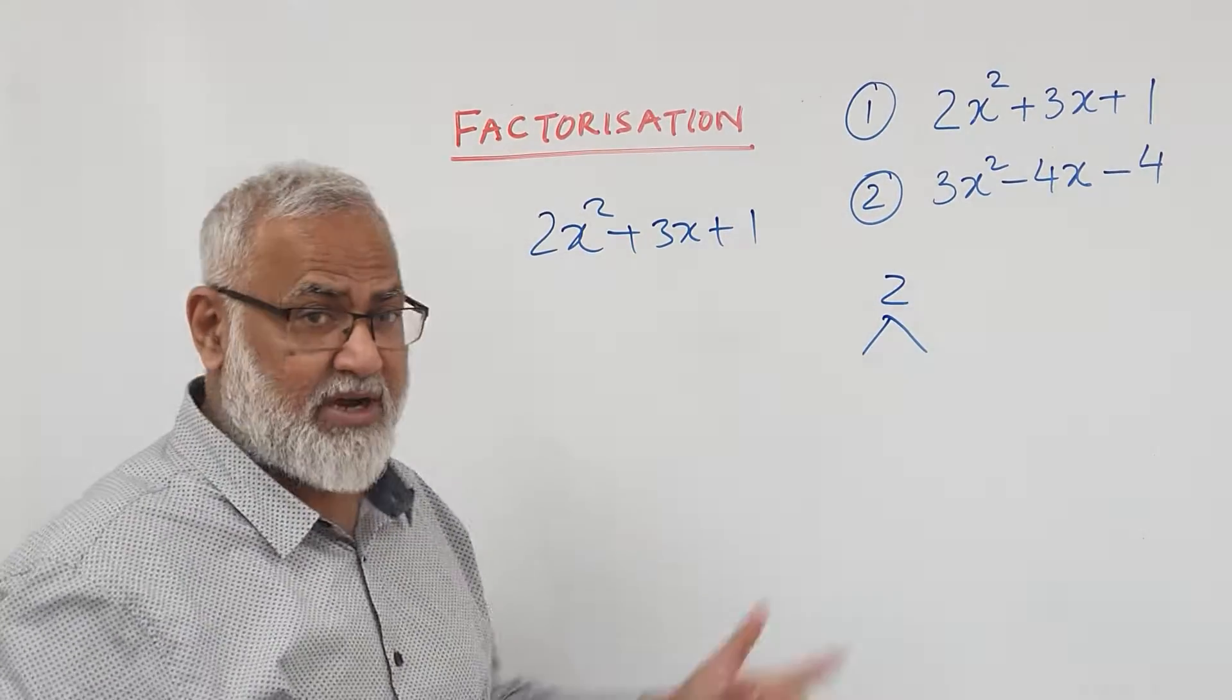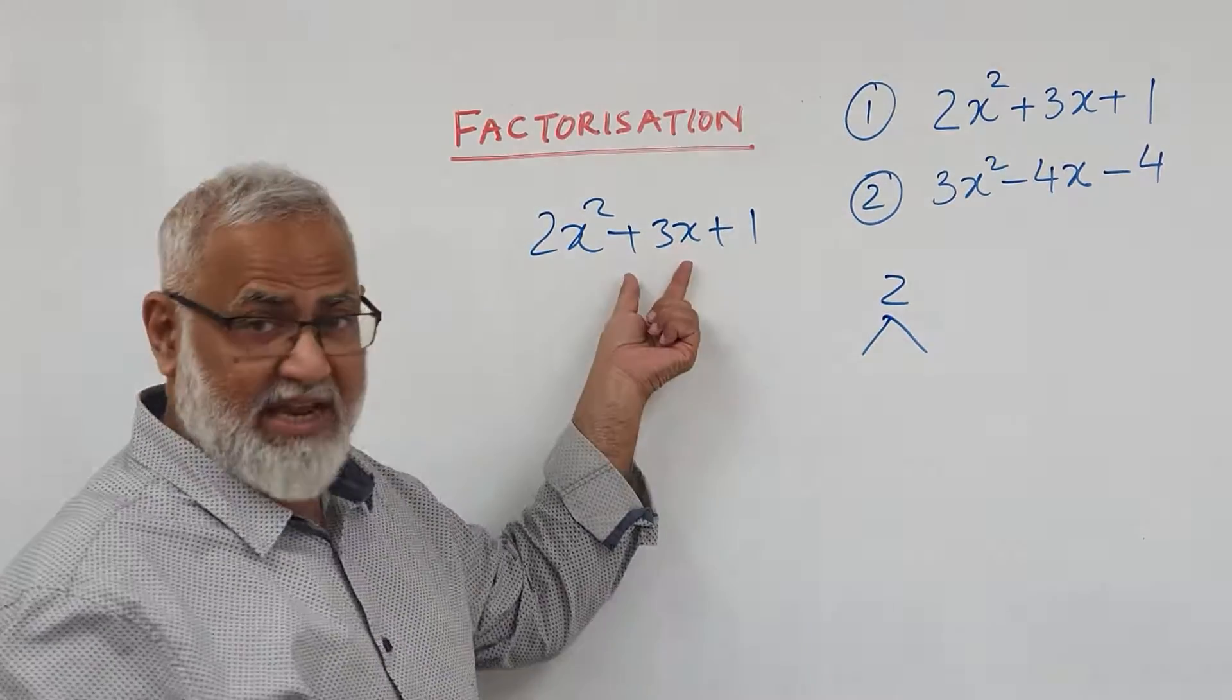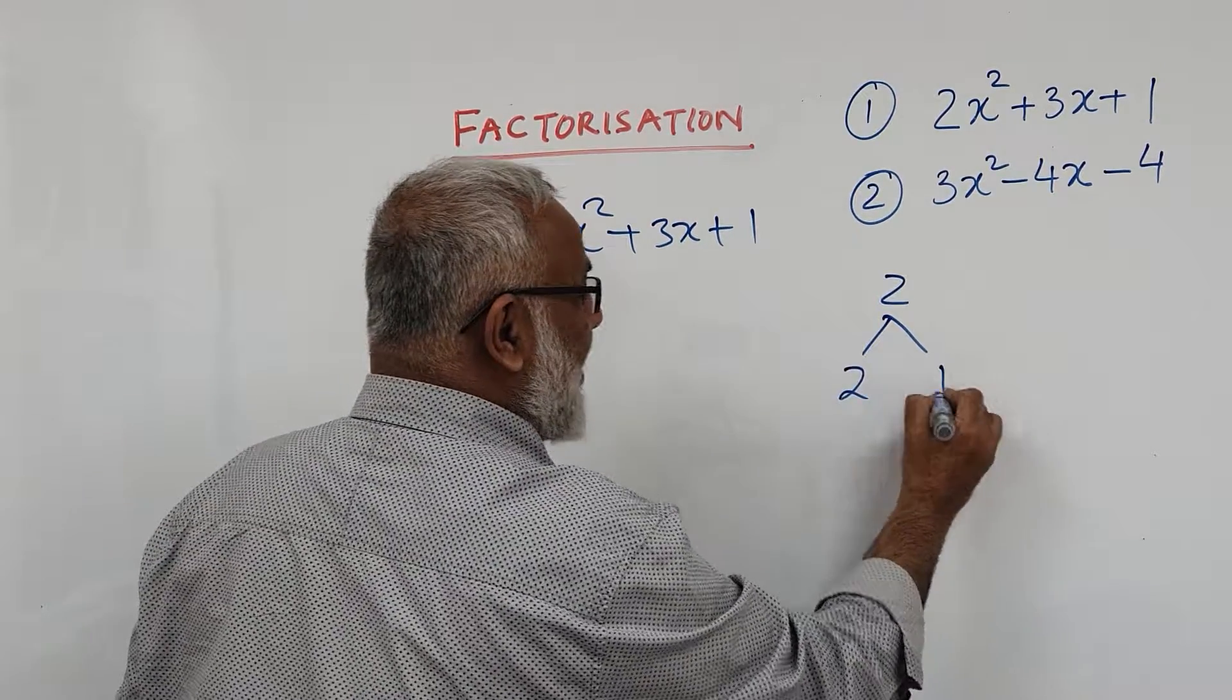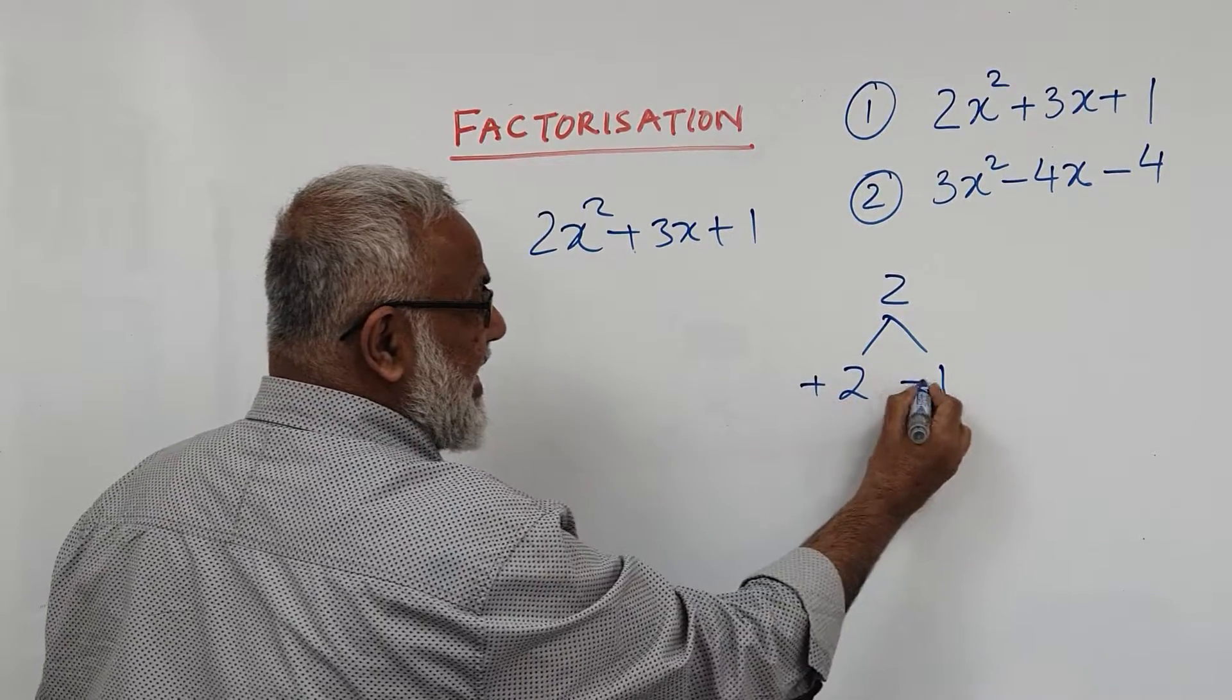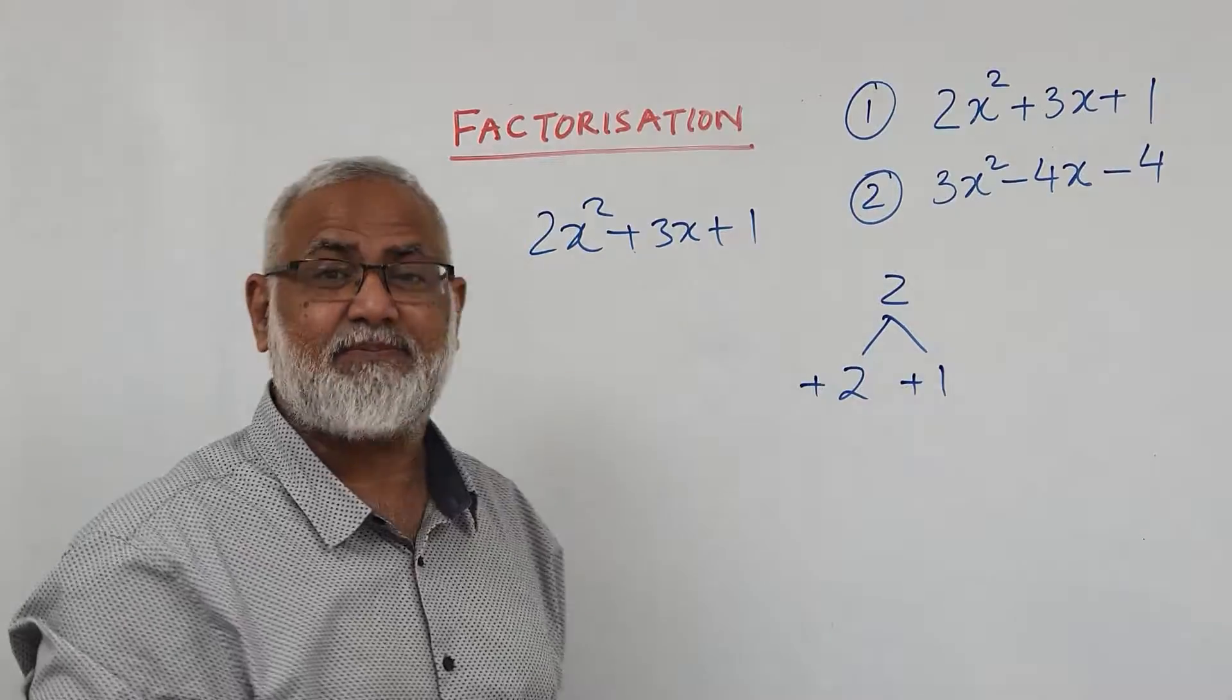Split into two numbers to add up to get the middle number. So the answer is 2 and 1. You put this sign here and here. So plus 2 and plus 1 is plus 3.